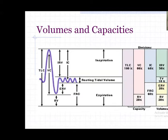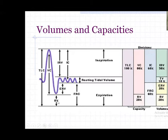Expiratory reserve volume is the volume used during exercise. Whatever air is left in the lung after maximum expiration cannot be breathed out completely - the lung would collapse like a balloon. There is always about 20% of air remaining, around 1.2 liters, called residual volume. Residual volume cannot be measured by normal spirometry. Therefore, total lung capacity and functional residual capacity also cannot be measured by spirometry, as they include residual volume.